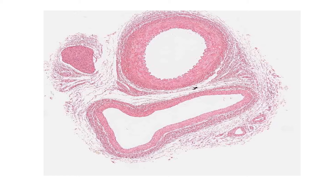What you're looking at now is a cross-section of an artery and a vein on a slide. Do you think you can tell which one is the artery and which one is the vein? Think about the function of both vessels. Which one would you expect to have a thicker wall?